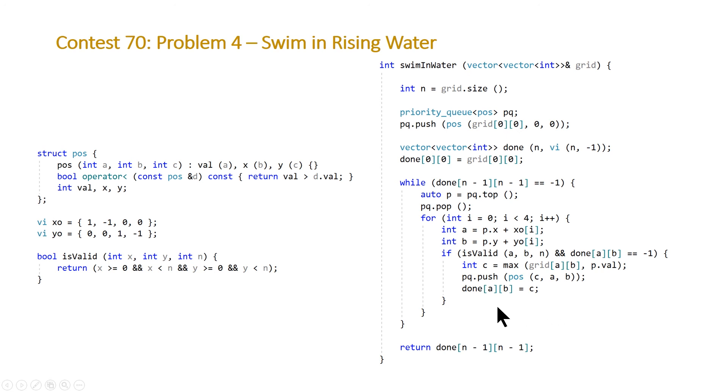At the element n minus one, n minus one, which is the element in our bottom right hand corner. And the complexity of this algorithm is simply going to be the size of your grid, which will be n squared. Thanks for watching, if you enjoyed this video hit that like button.